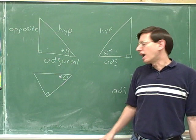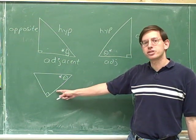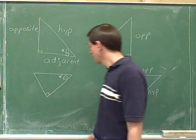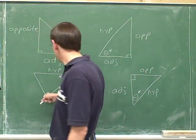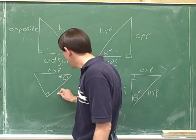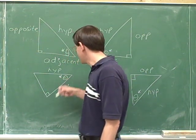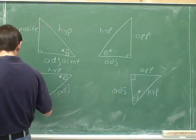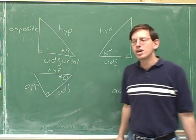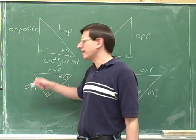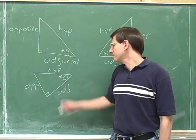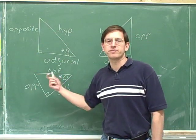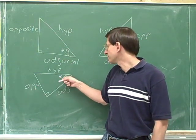Please label the hypotenuse, opposite, and adjacent sides for this triangle. Here's the hypotenuse, opposite to the 90-degree angle. Here's the side that's adjacent — it's adjacent to this theta angle that we're focusing on. And here's the side that's opposite to theta. Why am I focusing on this angle and not on this angle? Well, just because I feel like it. If we decide to focus on this angle, then this is the side that's adjacent. If we decided to focus on this other angle, things would be different. But for the time being, I decided to focus on this angle.